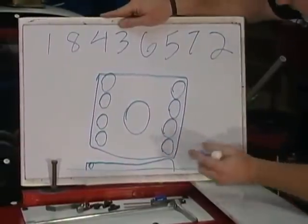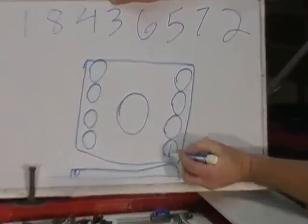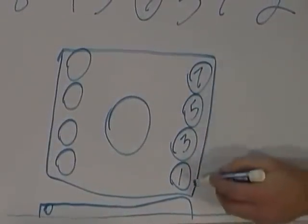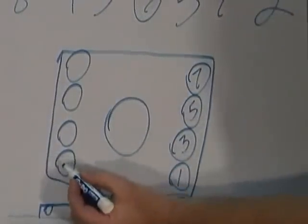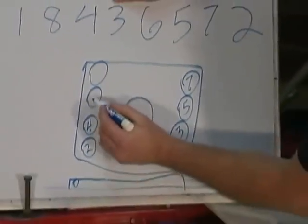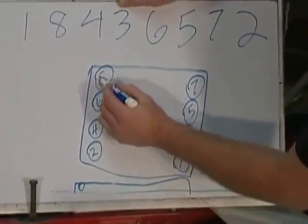On the small block Chevrolet, number one is on your driver's side. Number three, number five, and number seven - all the odd cylinders are on the driver's side. On the passenger side are your even cylinders: two, four, six, and eight.